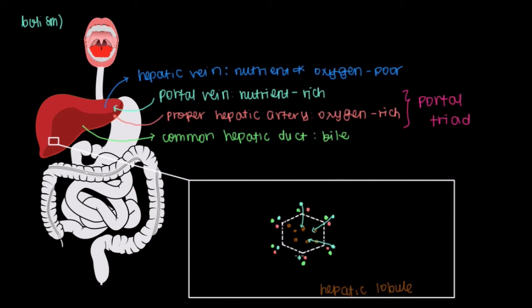So that way, these hepatocytes, these liver cells, can extract nutrients for the metabolism or storage of macromolecules. And of course, hepatocytes are just like any other cell in the body. They need oxygen to survive. And so oxygen will be carried in from our proper hepatic artery to supply the hepatocytes with oxygen.